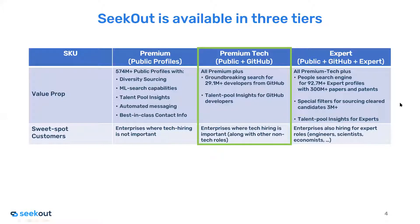SeekOut is available in three tiers. Our Premium package allows access to 574 million public profiles globally, with diversity sourcing, machine learning search, and insights. The Premium Tech license also searches those candidates who have a GitHub profile — that's 29.1 million developers. Our Expert package adds the ability to search papers, patents, and conference speakers. We won't cover Expert today, but let us know if you're interested.